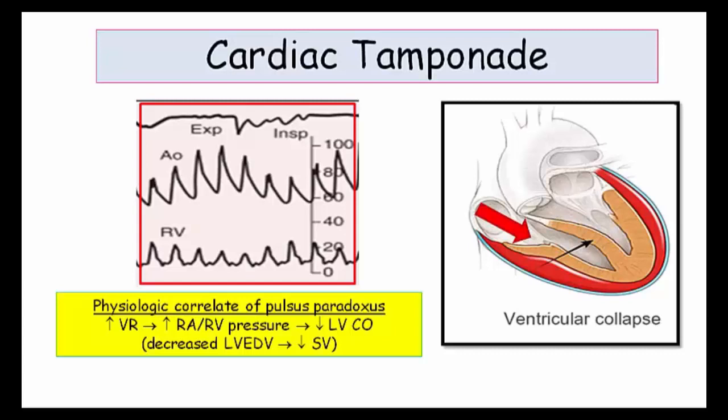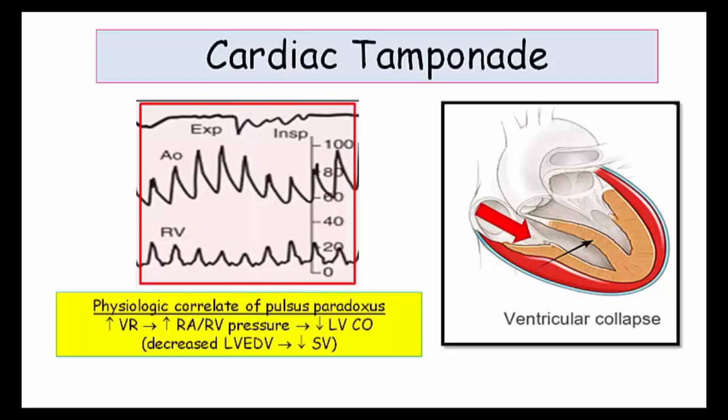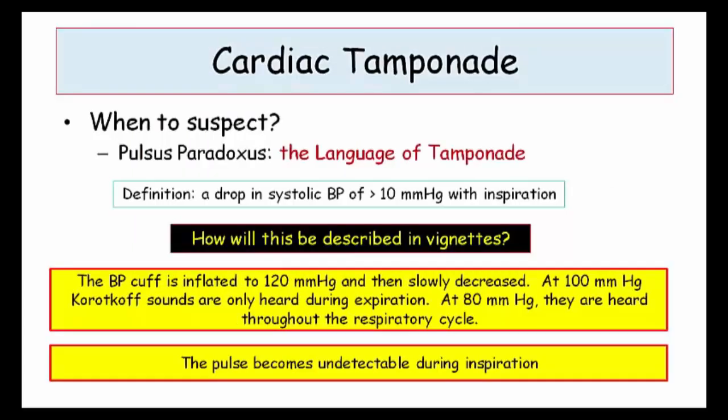This slide demonstrates graphically what we just described. You can see expiration and inspiration labeled at the top of the tracing. During expiration, the aortic pressure is noted around 100 over 60. But during inspiration, the aortic pressure reflecting left heart cardiac output drops below 80 over 60 while the right ventricular pressure rises. This is an exact representation of pulsus paradoxus — increased right heart filling causes bowing of the IV septum into the left ventricular cavity, resulting in an abnormally large drop in systolic blood pressure during inspiration from a decrease in stroke volume.